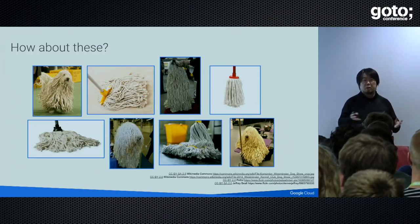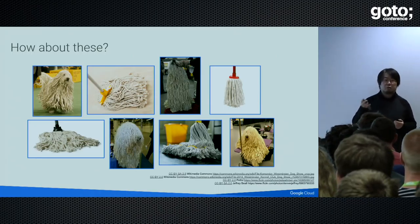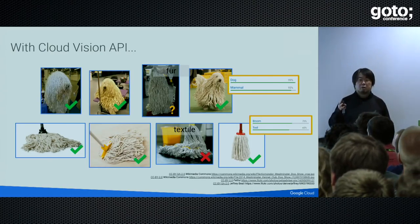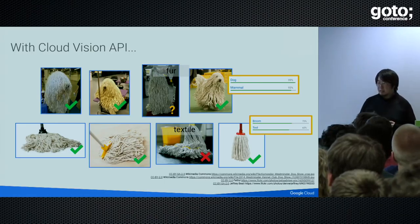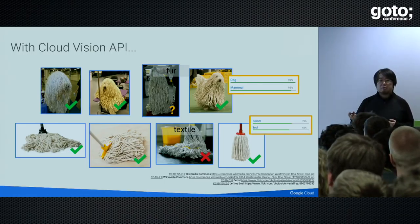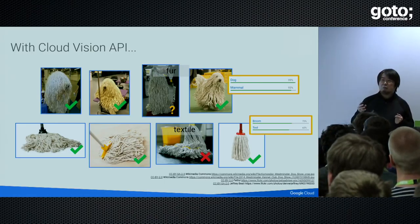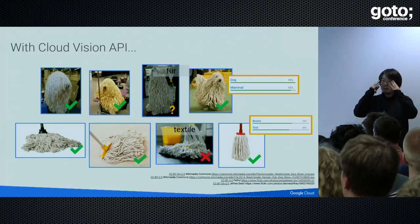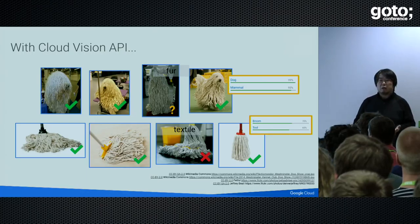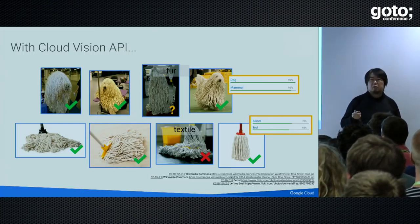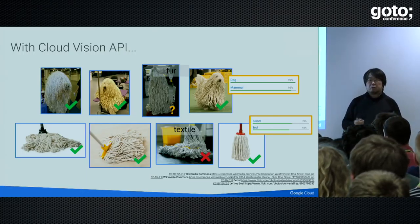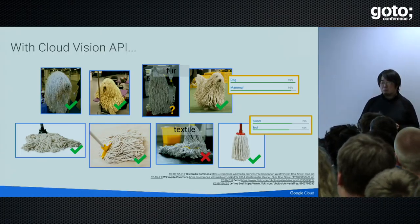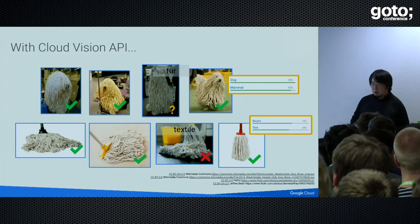Specifically, if you upload these images to the Cloud Vision API, it does a pretty decent job classifying them. Any machine learning algorithm cannot achieve 100% accuracy — it's almost impossible. Usually machine learning can give you like 70%, 80%, or 95% accuracy, not 100%. But still, it's pretty reasonable and does a decent job.